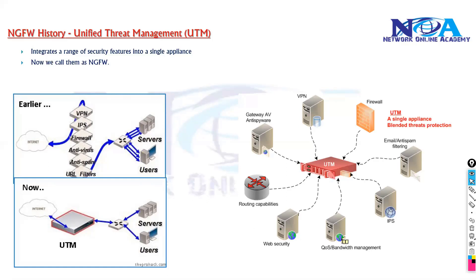UTM devices started gaining popularity since 2019, partly because of the all-in-one approach which simplifies installation, configuration, and maintenance. It allows network administrators to centrally manage all security defenses from one single device. Prominent UTM brands include Cisco, Fortinet, Sophos, Netgate, SonicWall, and Checkpoint. In today's networks, we call them next generation firewalls — a term used to define the current generation of firewalls.